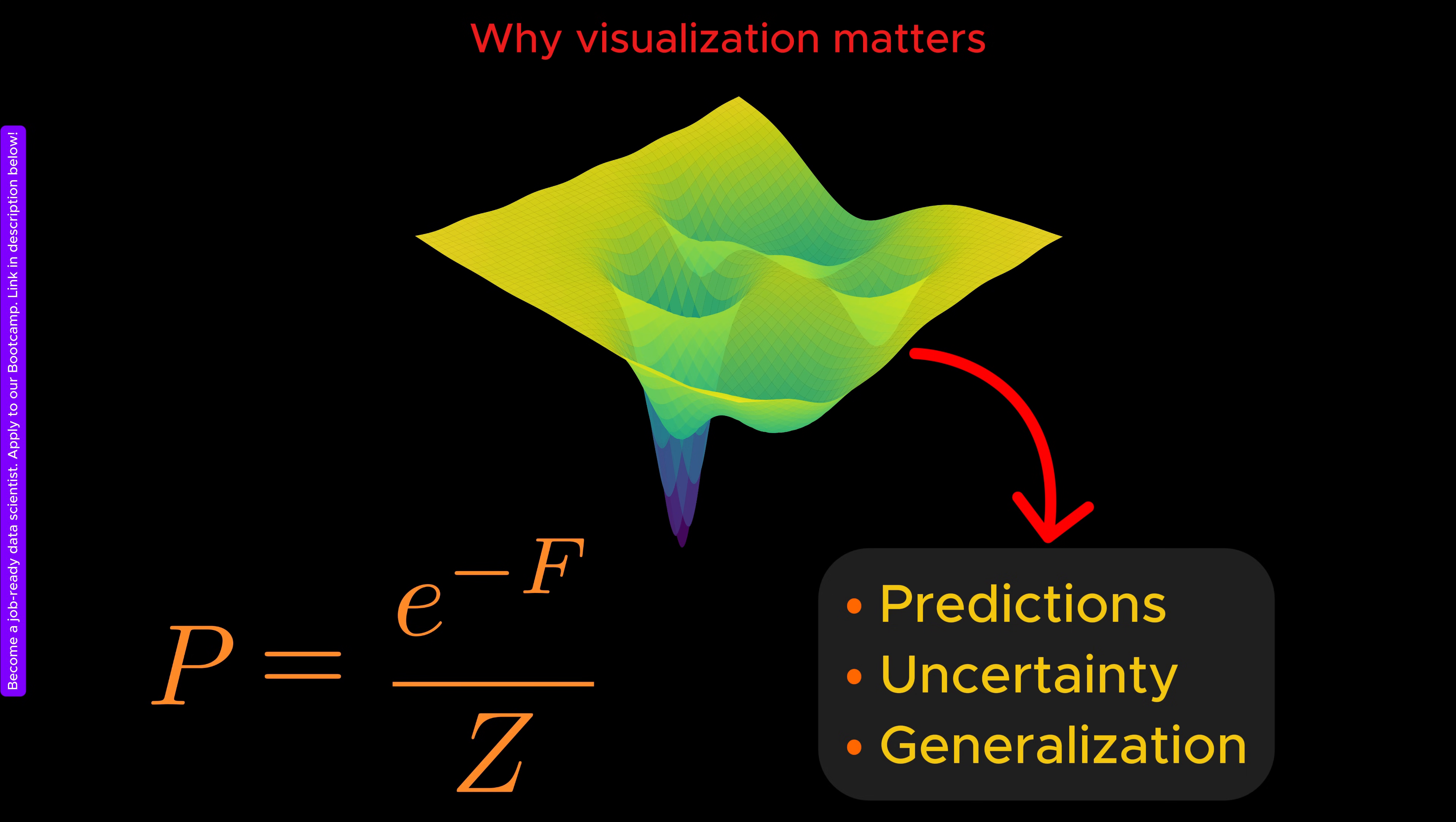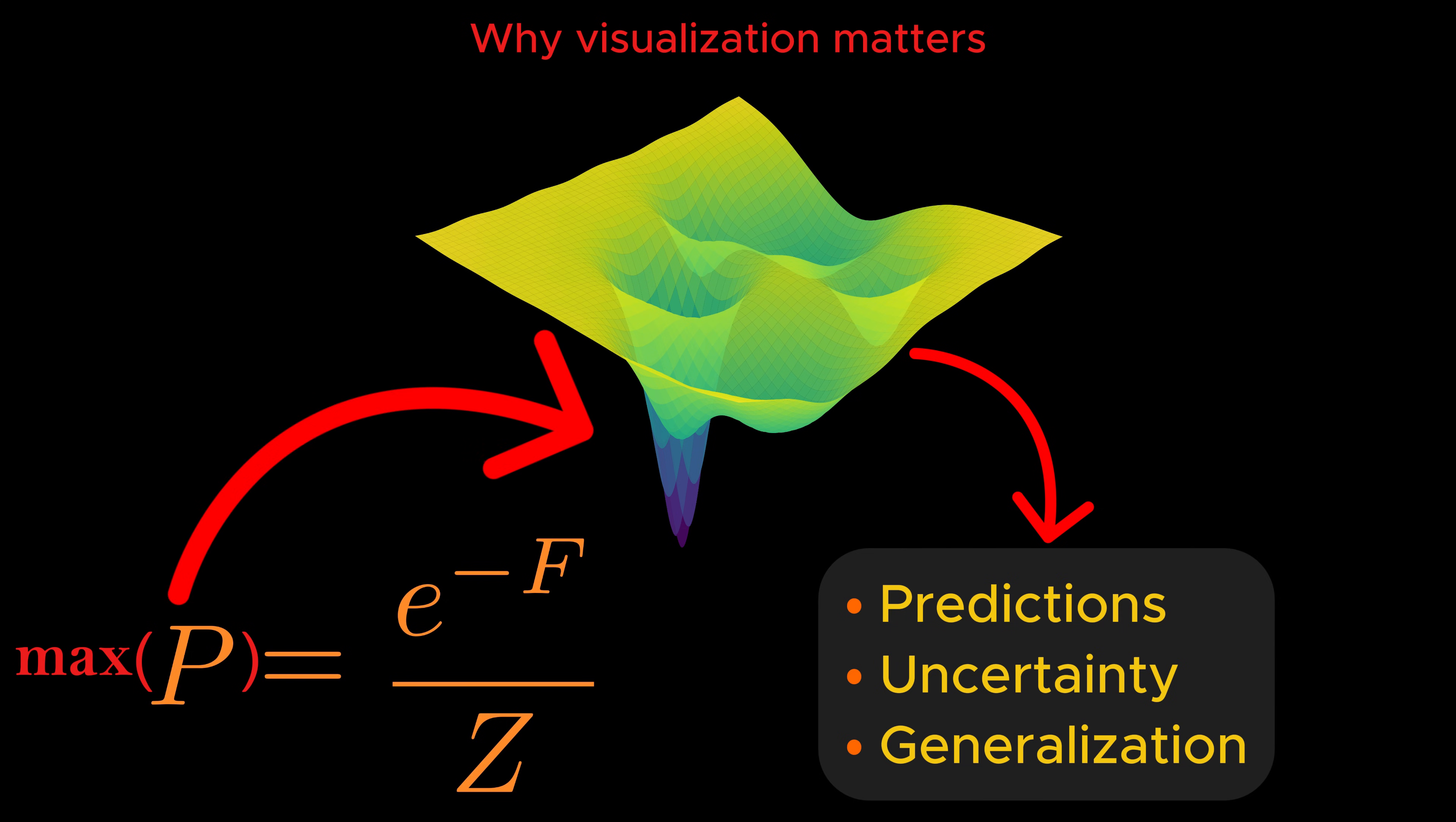All other information can, in principle, be extracted from it. The most likely scenarios, meaning the configurations with the highest probability, correspond to the global minima of the free energy.